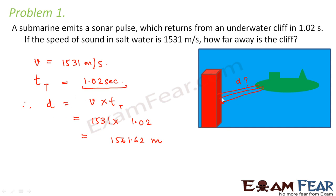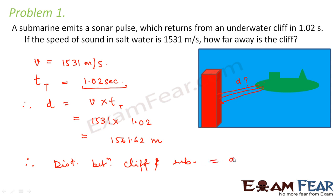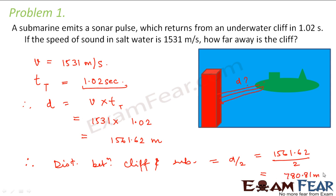The sonar pulse is emitted from the submarine, goes to the cliff, and comes back from the cliff. So that total distance D covers both trips. We have to calculate the distance between the cliff and the submarine, which will be half of this. Therefore, distance between cliff and submarine = D/2 = 1561.62 / 2 = 780.81 meters. So this is the distance between the cliff and the submarine.